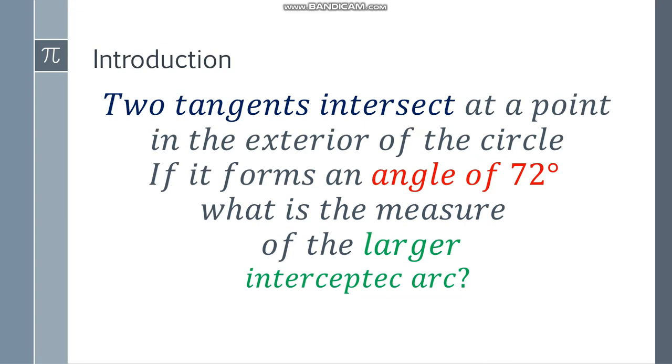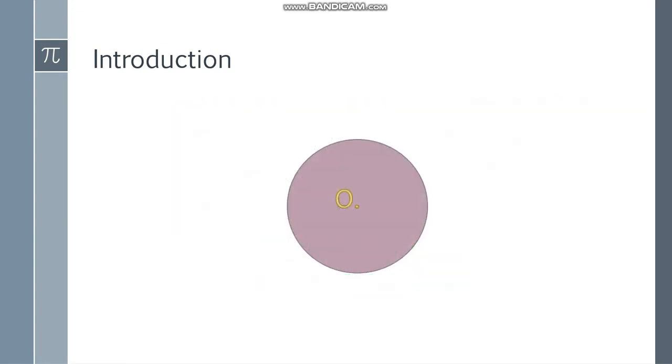So the first thing you should do is visualize it first. Draw a circle with center O. Like that. Next thing is draw the two tangents. It should just touch at one point and form an angle here.